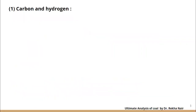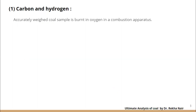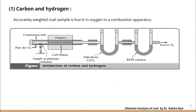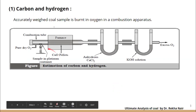First, let us discuss the procedure for calculation of carbon and hydrogen. For calculating the amount of carbon and hydrogen present in coal, we use a combustion apparatus. An accurately weighed coal sample is burned in oxygen in the combustion apparatus.